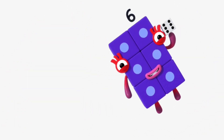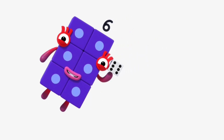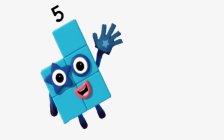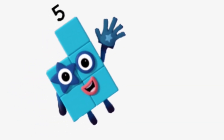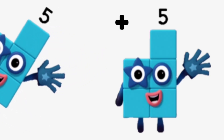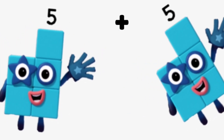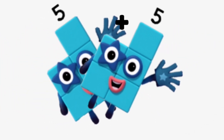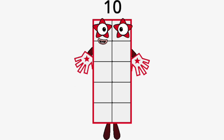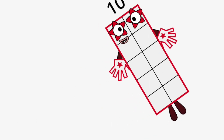Number Blocks 3 plus Number Blocks 3 equals to Number Blocks 6. Number Blocks 5 plus Number Blocks 5 equal to Number Blocks 10.